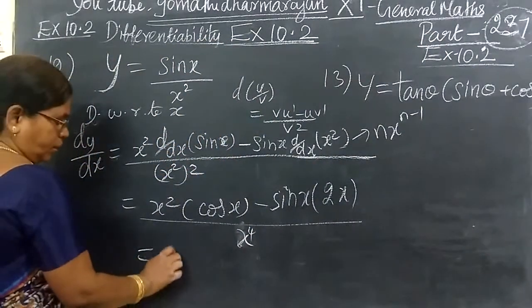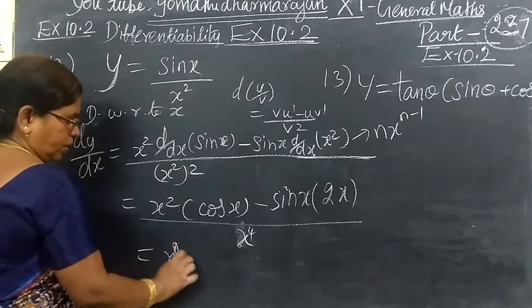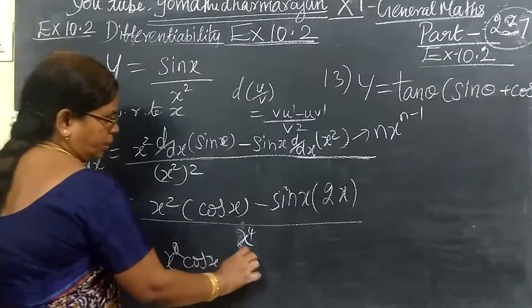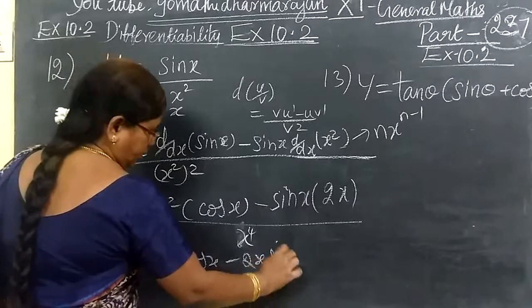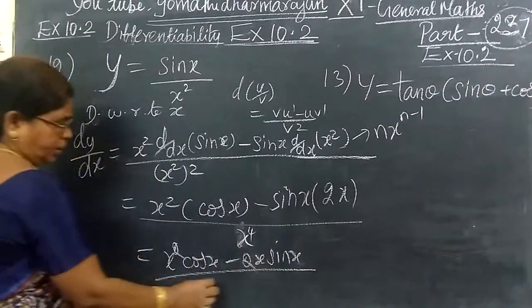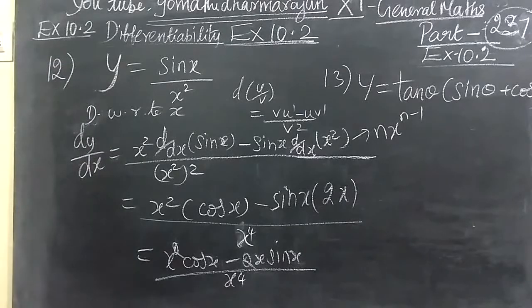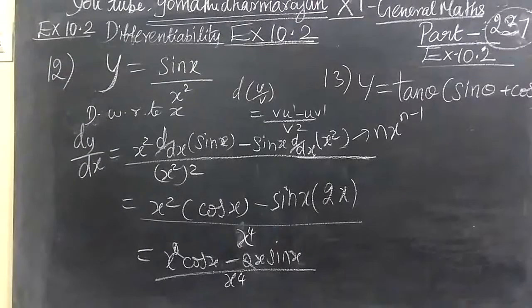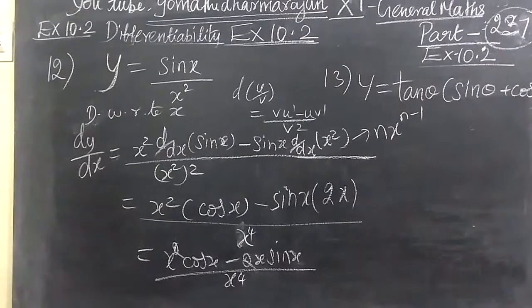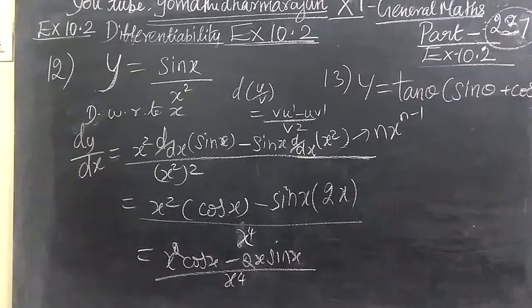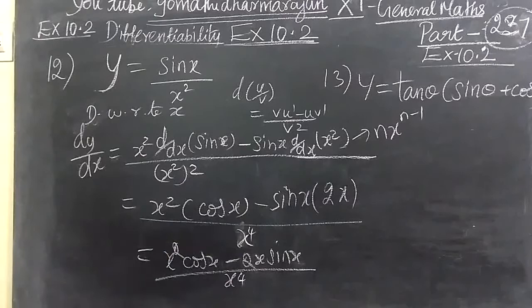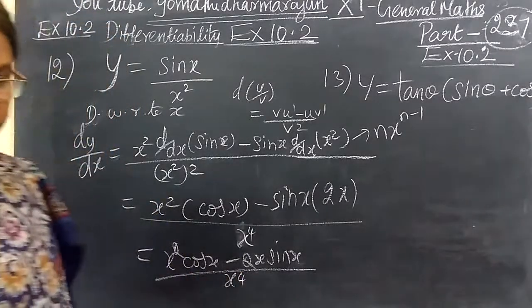Then x square cos x minus 2x sin x by x power 4. So this is the answer for this. Now coming to the next question.